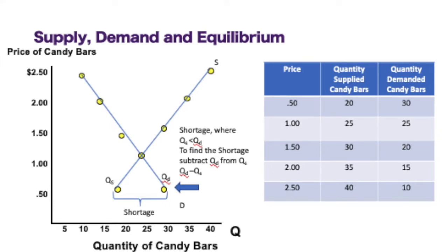Moving on to shortages: just like surpluses, there are shortages in the market. Shortages occur below the equilibrium point, when quantity demanded is greater than quantity supplied. People are lining up wanting to buy candy bars, but producers aren't producing as much at that price. At $0.50, producers only want to produce 20 candy bars, but demand is at 30, so we're at a shortage of 10. That means 10 people want to buy candy bars but can't because sellers have already sold out at $0.50.